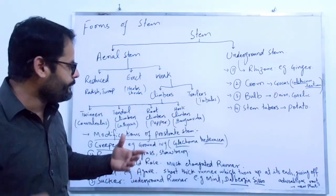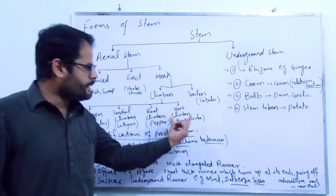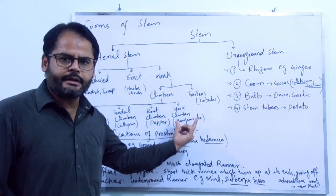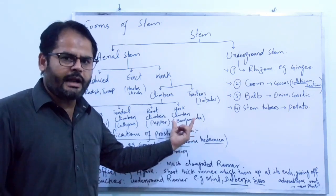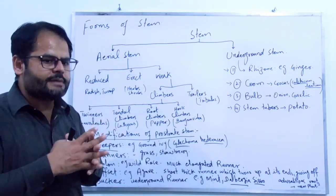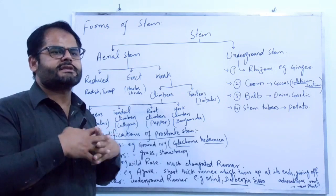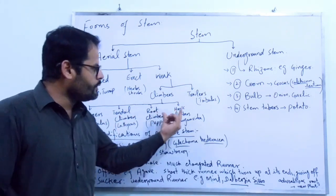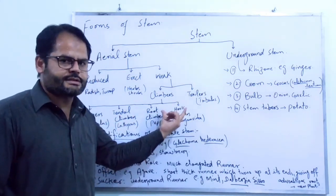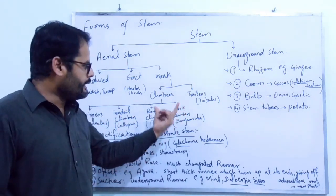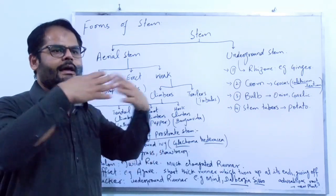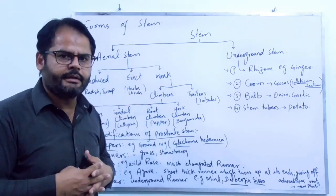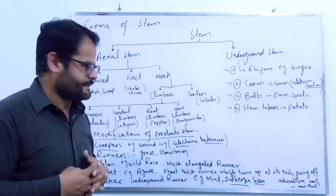Bougainvillea glabra is an ornamental plant which climbs upon certain surfaces through hooks and thus grows upon that surface.